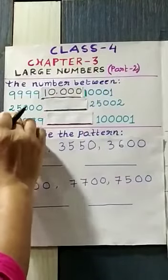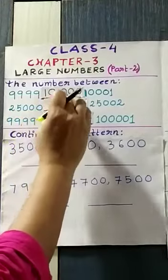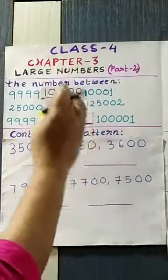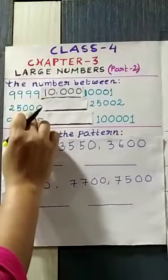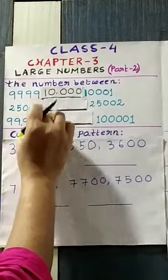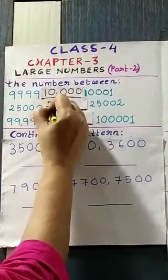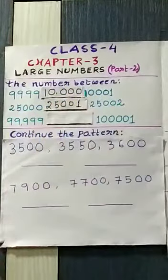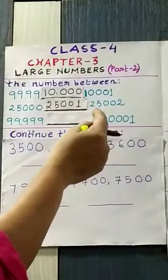Now the second one is 25,000. We have to write the next number — the after number. The same way, we add 1 with the number to get the after number. So 25,000 plus 1 becomes 25,001. And the after number 25,002 is already given.